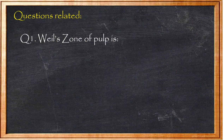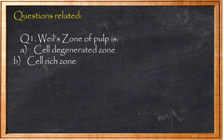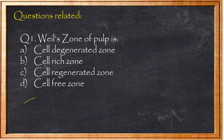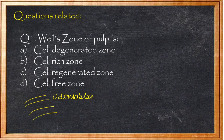Now let's recap with previous year MCQ questions. Question 1: Weil's zone of pulp is — A) cell-degenerated zone, B) cell-rich zone, C) cell-regenerated zone, D) cell-free zone. Answer: As discussed, the peripheral pulp has three zones from outside to inside: odontoblastic zone, then cell-free zone (called Zone of Weil), then cell-rich zone. So Weil's zone is the cell-free zone. Answer: Option D.